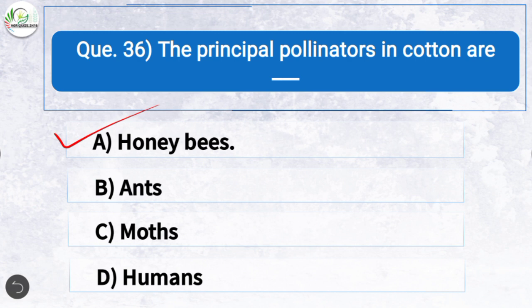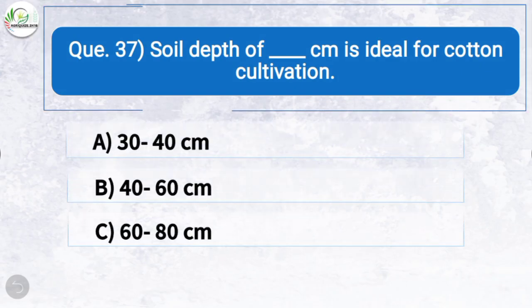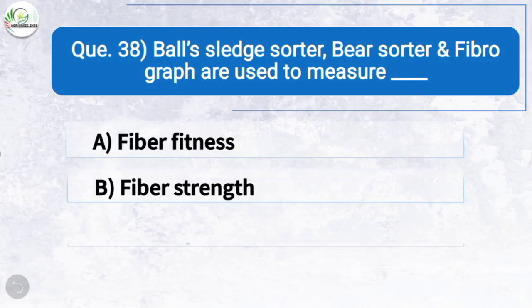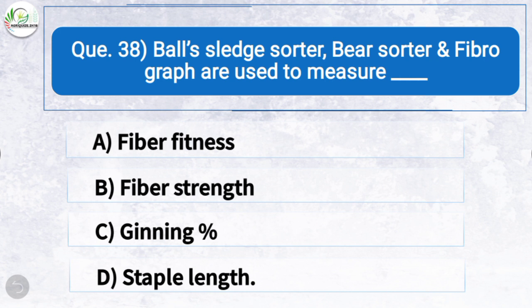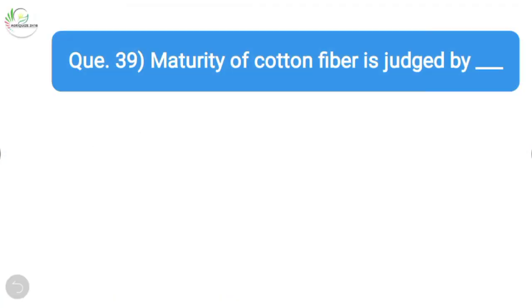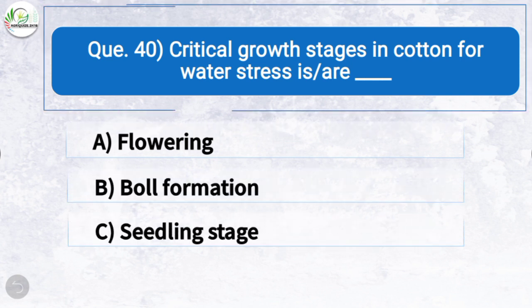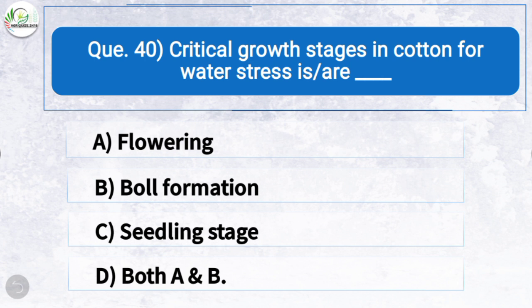Question thirty-six: The principal pollinators in cotton are — the correct answer is option A: honeybees. Question thirty-seven: Soil depth of how many centimeters is ideal for cotton cultivation? The correct answer is option D: 100 to 120 cm. Question thirty-eight: Ball sledge sorter, bear sorter, and fibrograph are used to measure — the correct answer is option D: staple length. Question thirty-nine: Maturity of cotton fiber is judged by — the correct answer is option D: arealometer.